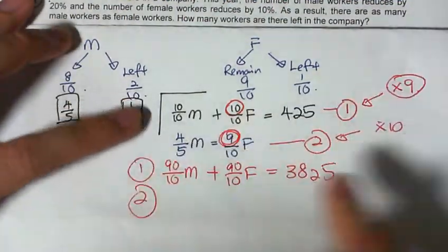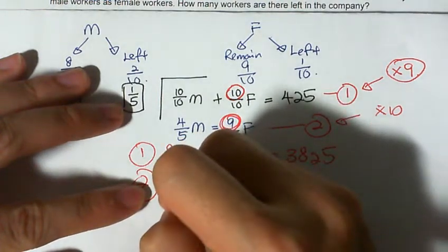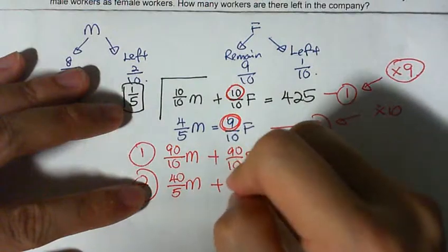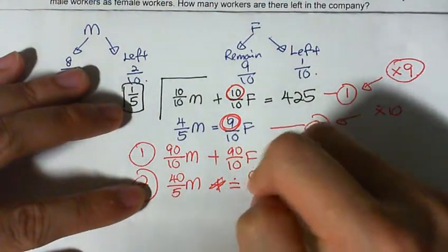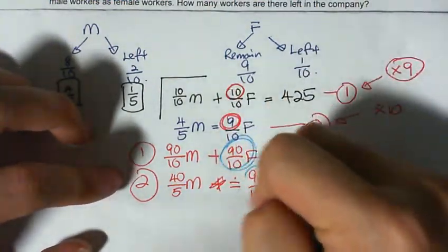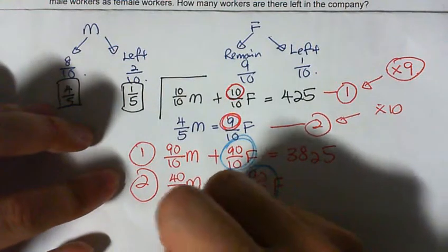Second equation: I get 40 over 5 male equals to 90 over 10 female. Now when I look at this, I know that this is the same as this. I can put this in, so 90 over 10 male plus 40 over 5 male equals to 3825.